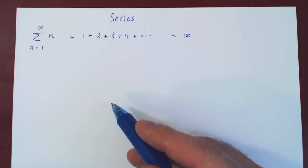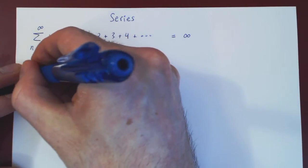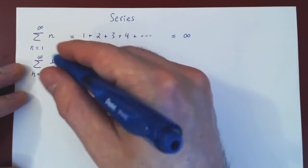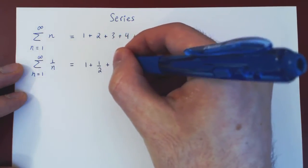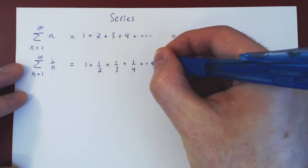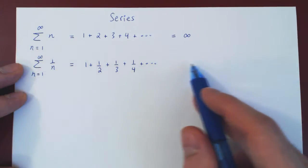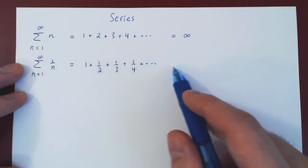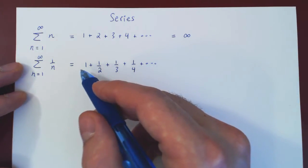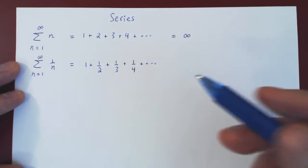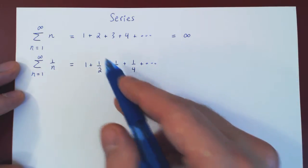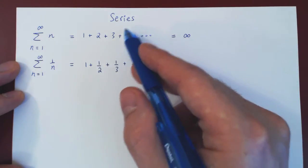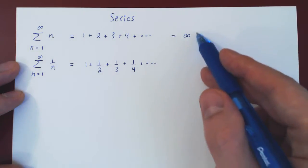Now what if we're summing from 1 to infinity 1 over n? This is a more interesting sum: 1 plus 1 half plus 1 third plus 1 quarter and so forth. We're trying to add all the reciprocals of the positive integers. The fact that the first series blows up was fairly obvious — we were adding larger and larger terms. Here the terms are getting smaller and smaller as we add more and more.